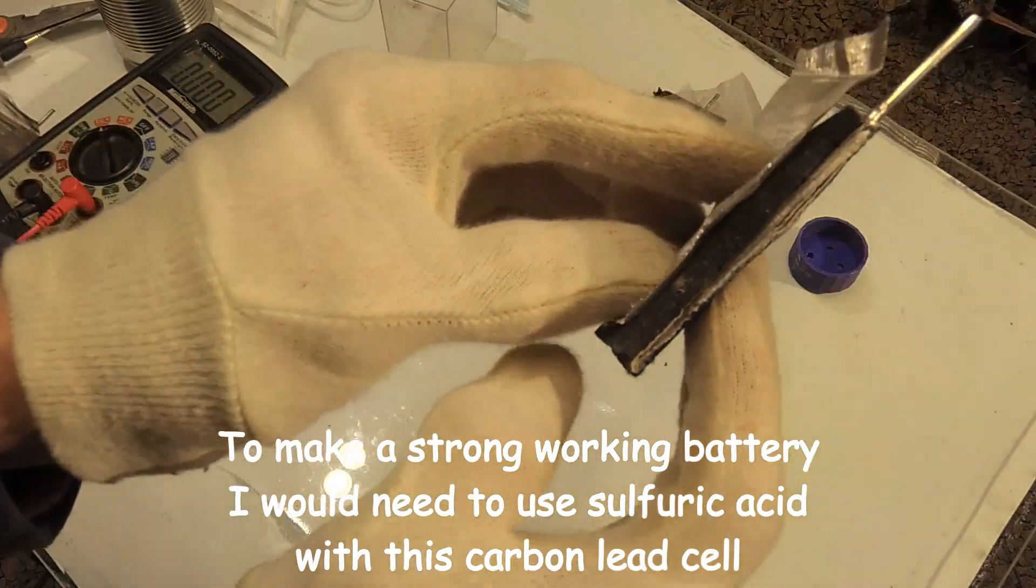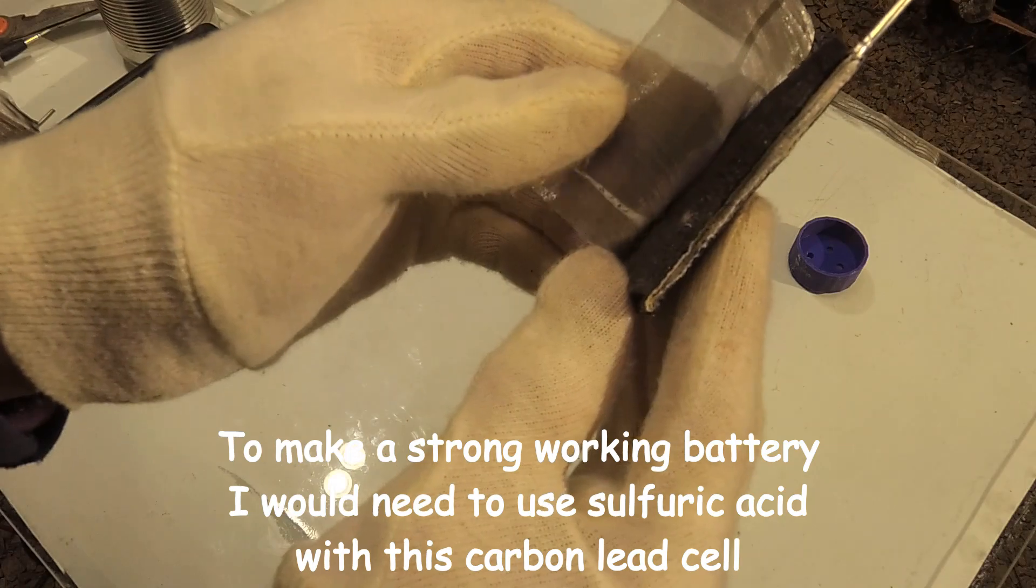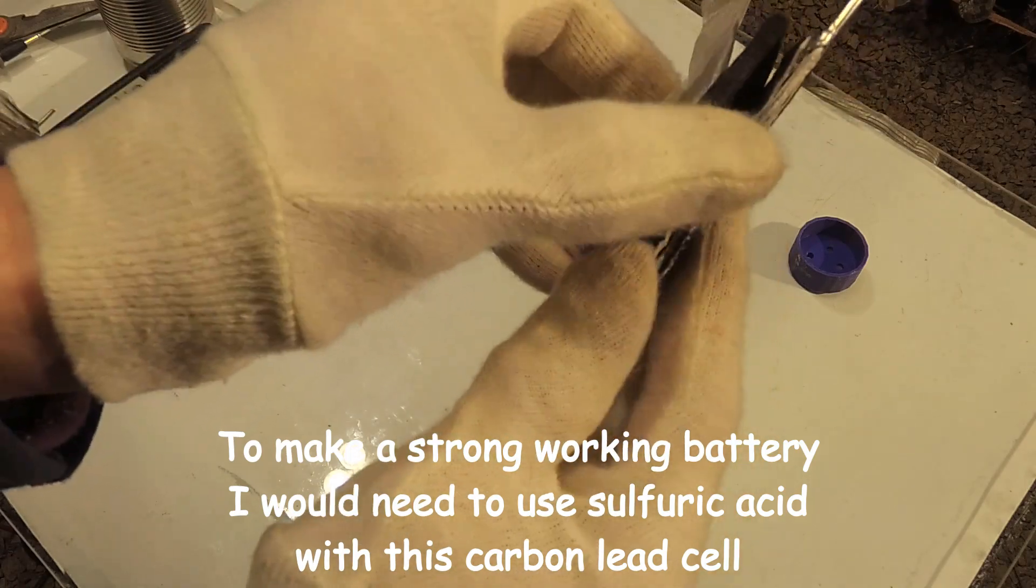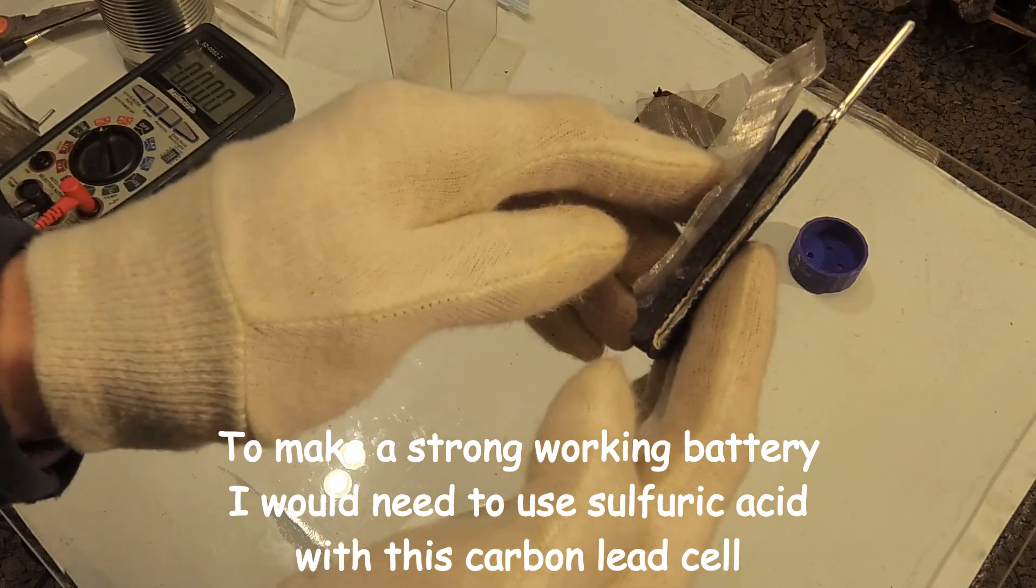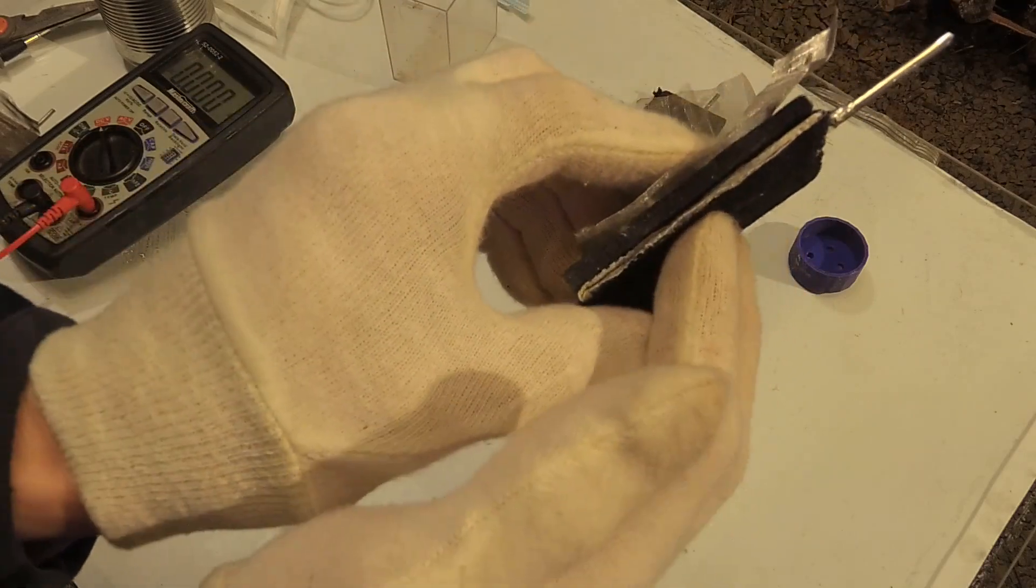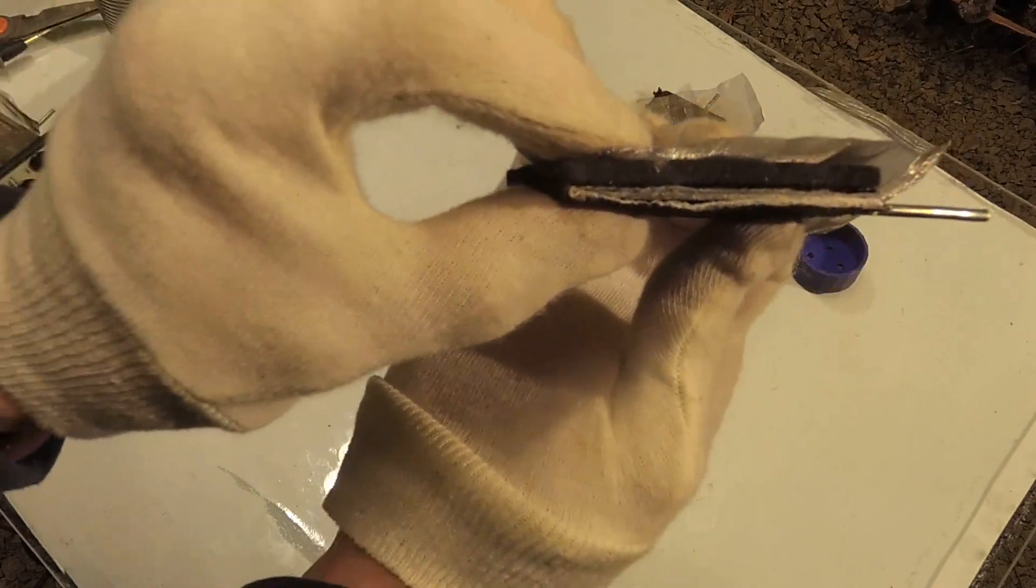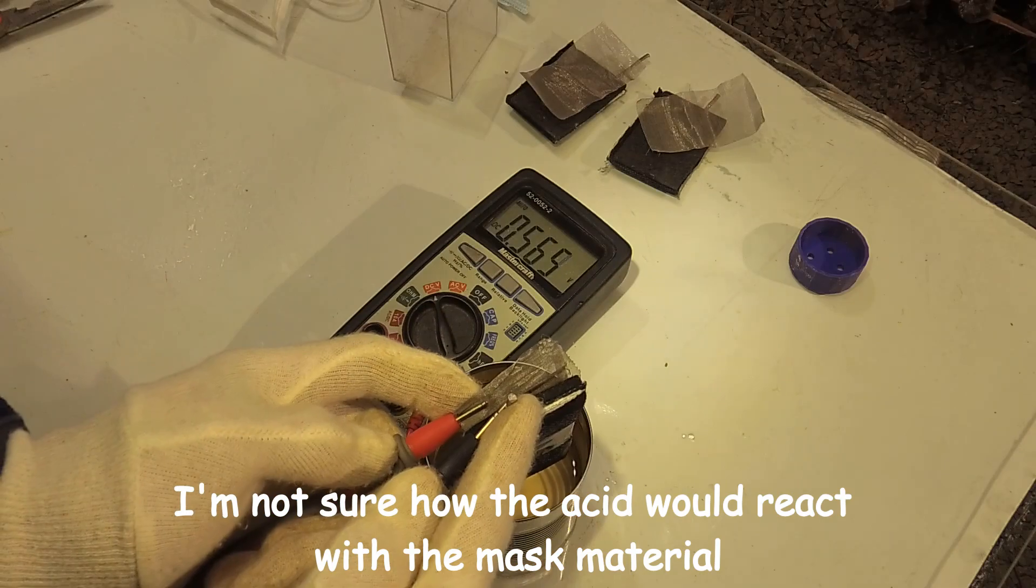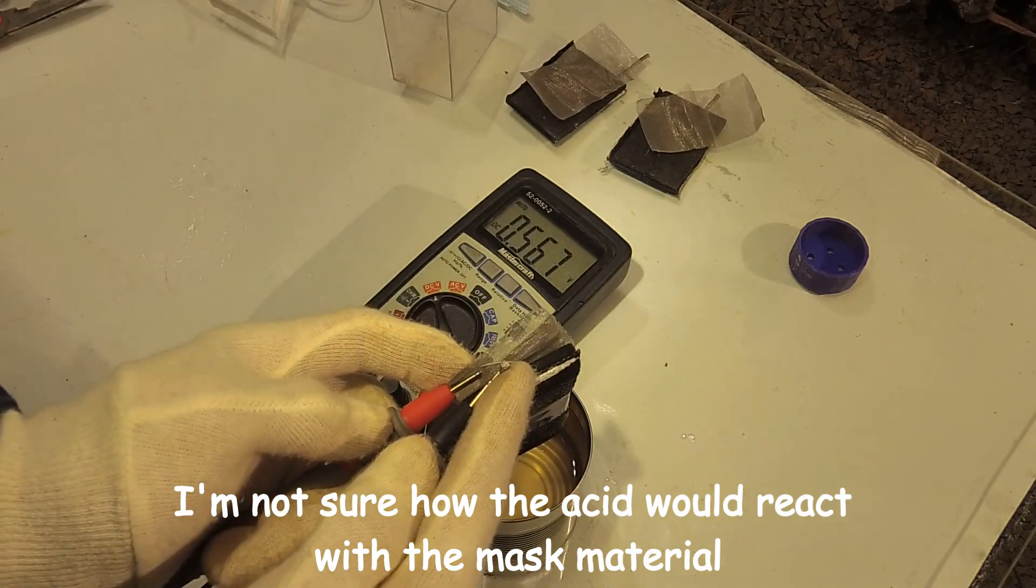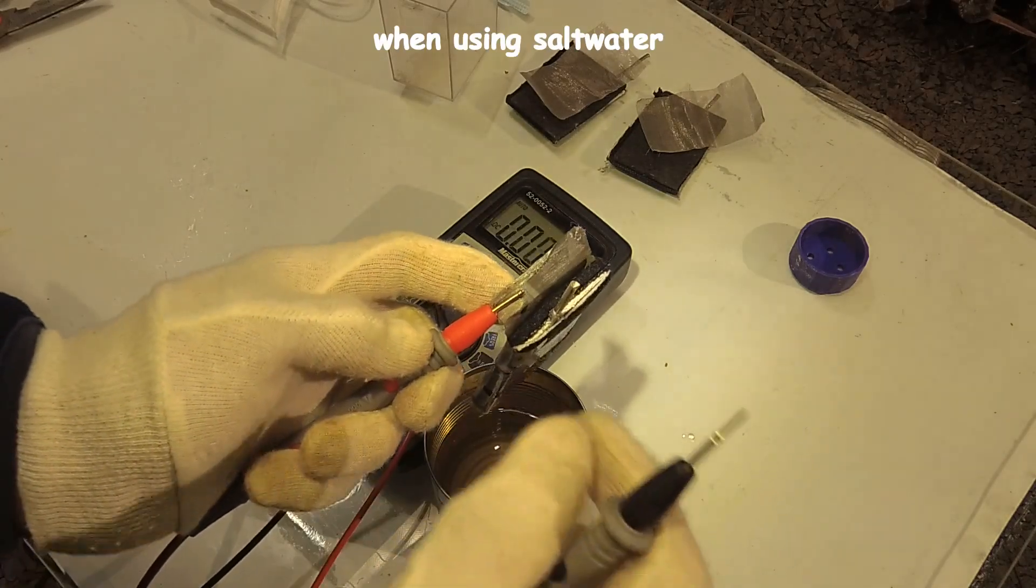So the materials in this battery here would actually last quite a while: stainless steel, carbon felt, the mask material, and the lead. You could do this with iron and aluminum or iron and copper and stuff like that, but it's not going to last as long as this carbon lead battery. You can see that the battery actually works. Amperage-wise we're probably not going to get much out of this. Now if we want to make this more voltage, then we need to add cells to this.